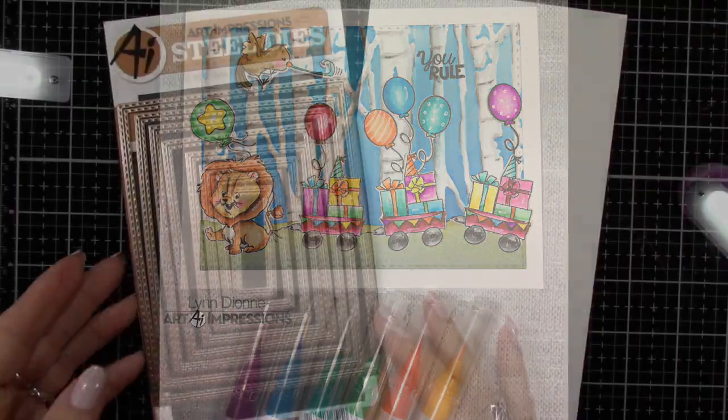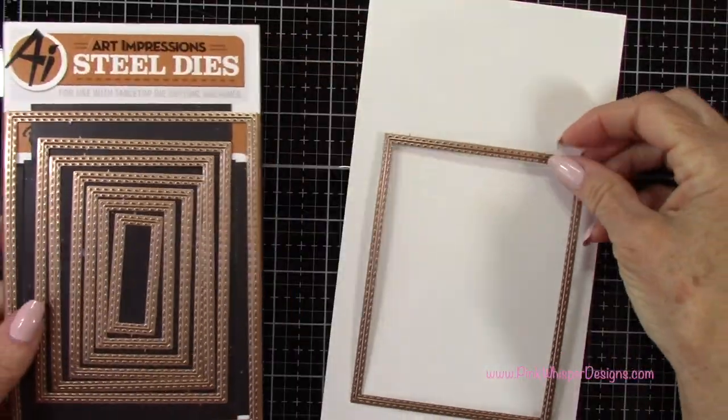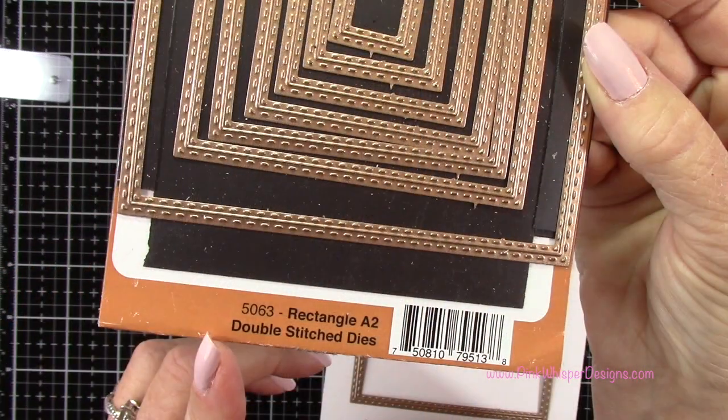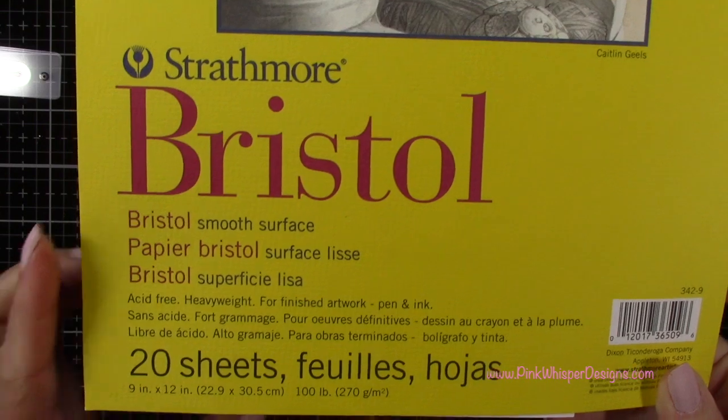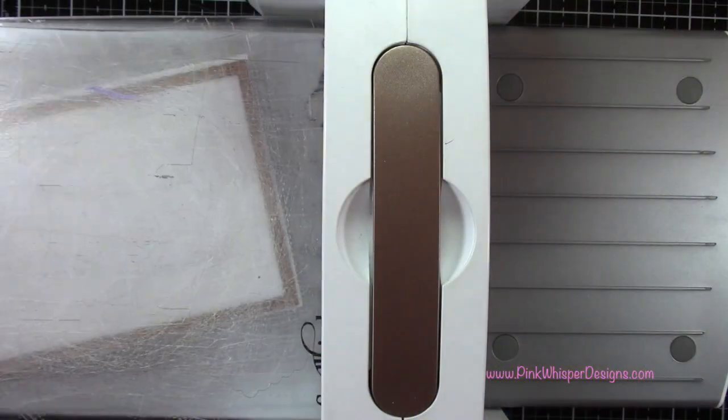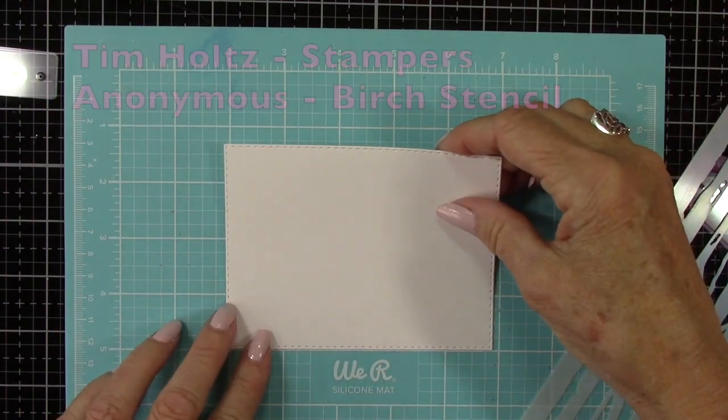So I'll go ahead and grab that second largest die and these are the Art Impressions Rectangle A2 Double Stitch Dies and I'm going to die cut two of these. For paper I'm using the Strathmore Bristol Smooth 100 pound cardstock and I'm running that through my die cutting machine.